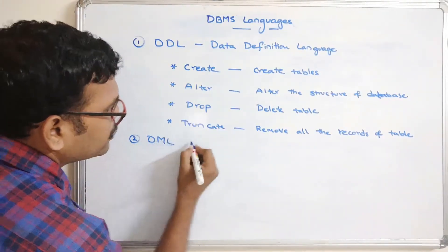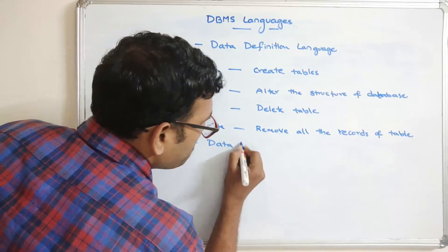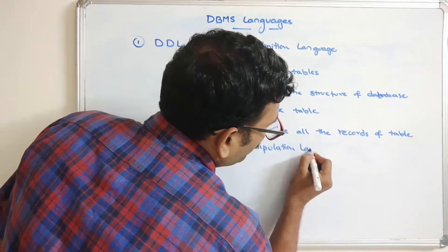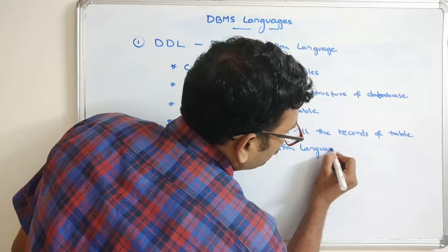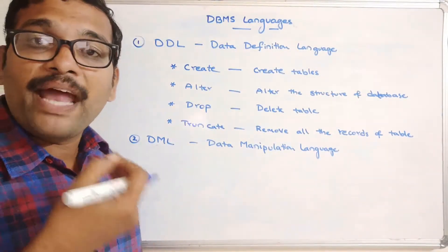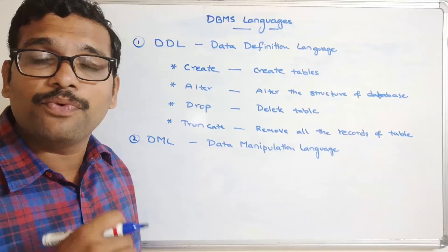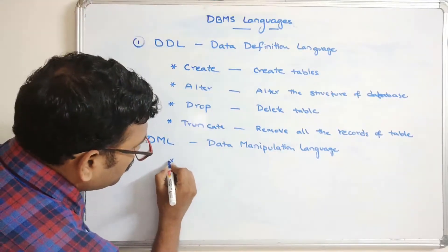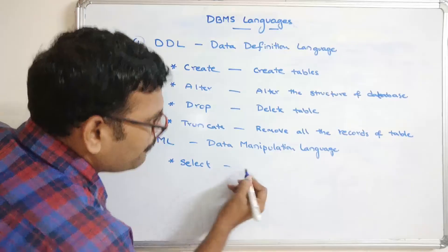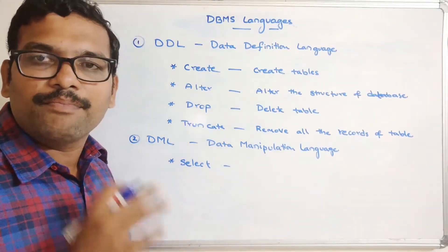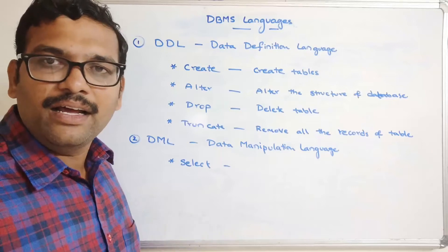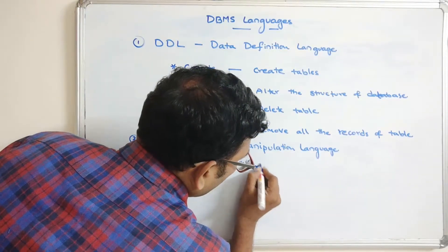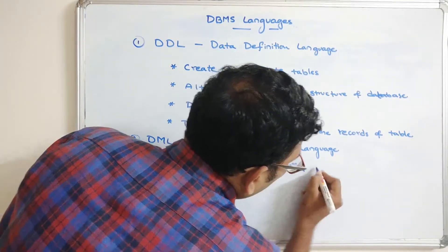The second language is DML, which stands for Data Manipulation Language. As the name indicates, whatever manipulations we do on the data, those commands come under DML. The first DML command is SELECT, which is used to retrieve data from the database.